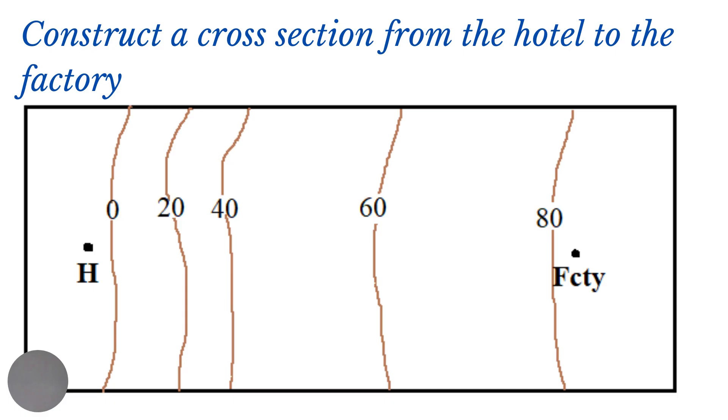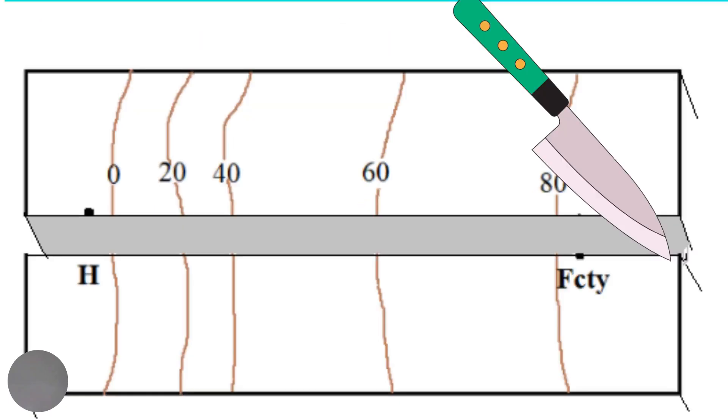Notice that the map is showing the land as though we are viewing it from above. The aim of doing the cross section is to show how the land looks from the side through that length from the hotel to the factory. So it is as if we are cutting through the land from the hotel to the factory and showing the side view or the shape of the land.